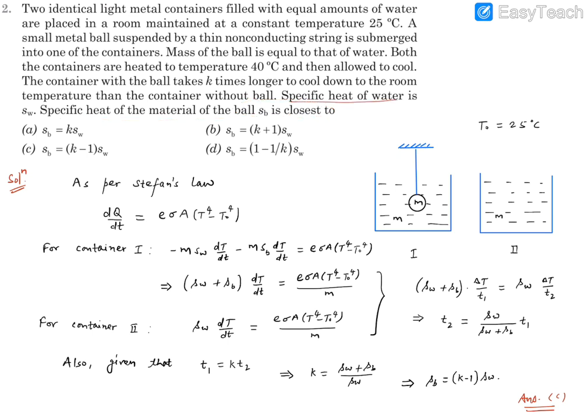The specific heat capacity of water is known to us. We look at the options - it is a relation between SW, which is the specific heat of water, and SB, which is the specific heat of the material of the ball. We need to answer in terms of k, the factor of the time difference.